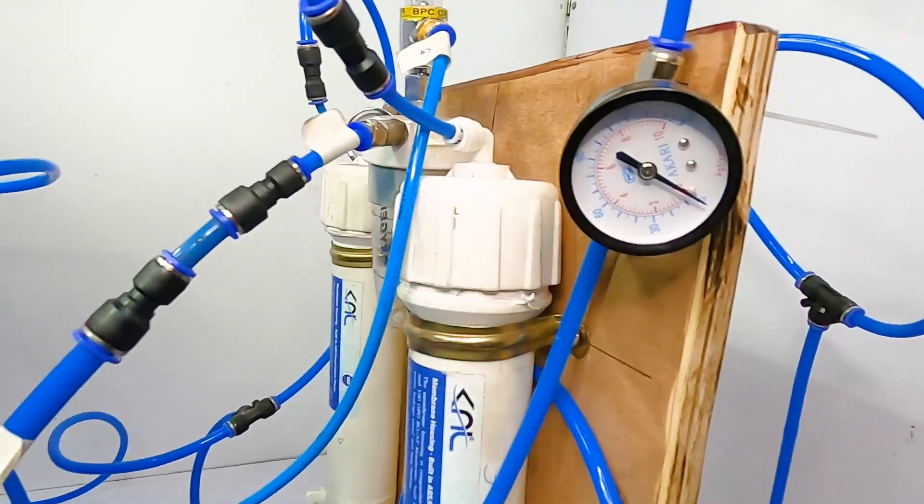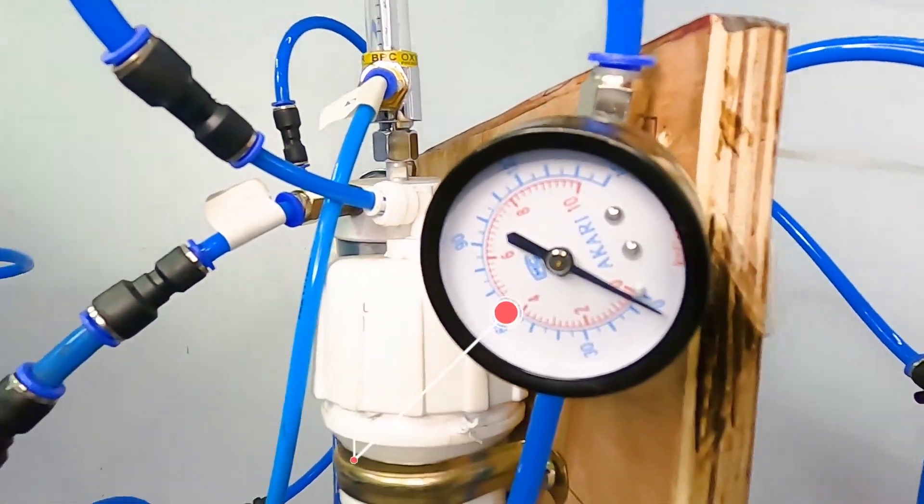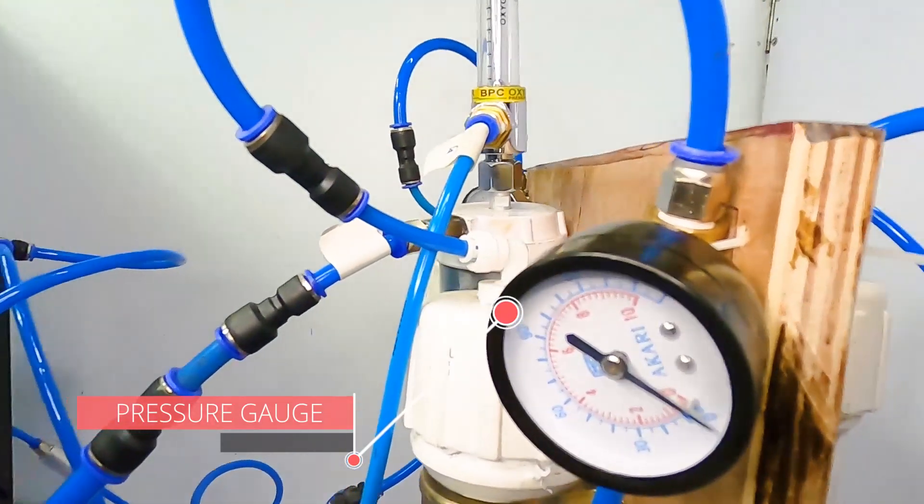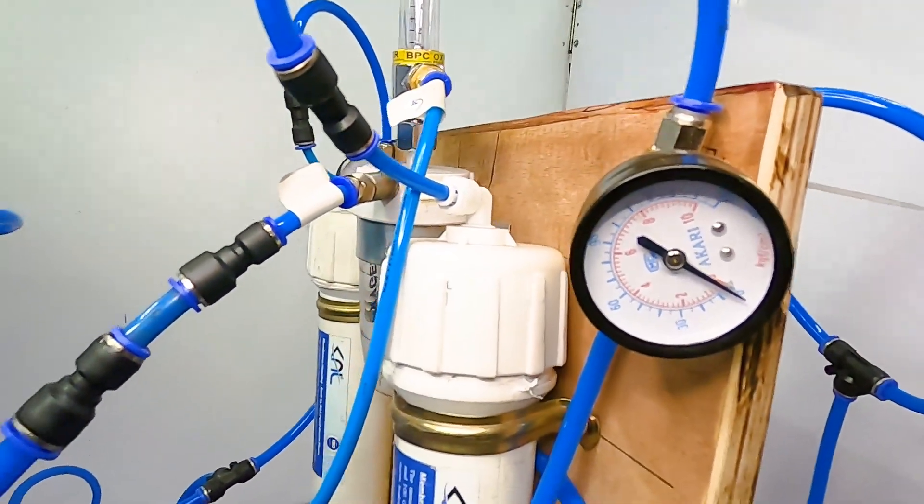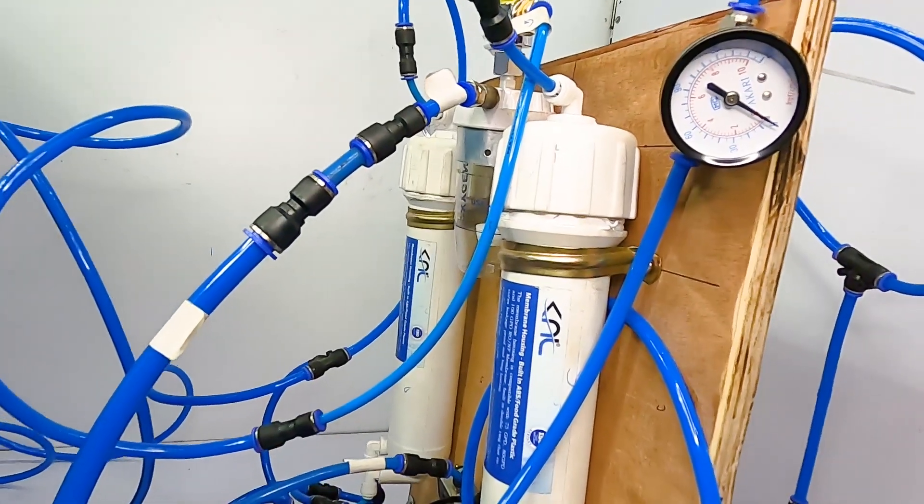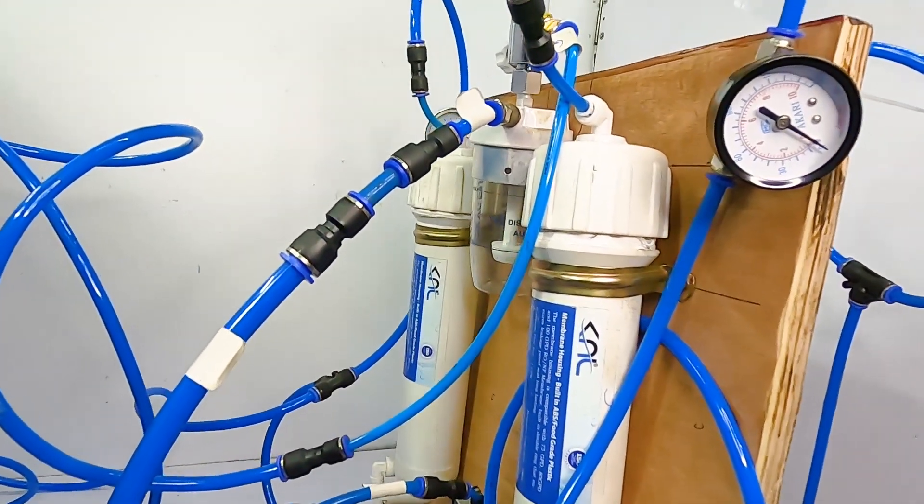And these gauges that you see here are used to check the air pressure that is in the cylinder. We need to ensure that the air pressure is around 30 psi for this operation to take place.